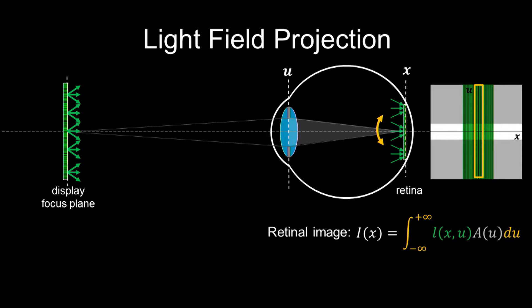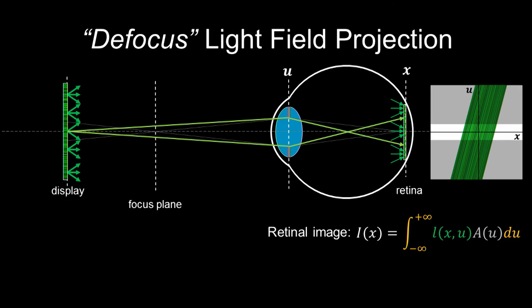This is a very simple image formation modeling of the light field projection. For the focus case, retinal light field is actually sharp, so the retinal integration actually becomes a convolution. Solving the vision correction problem is akin to solving an ill-posed deconvolution problem, which is pretty hard.